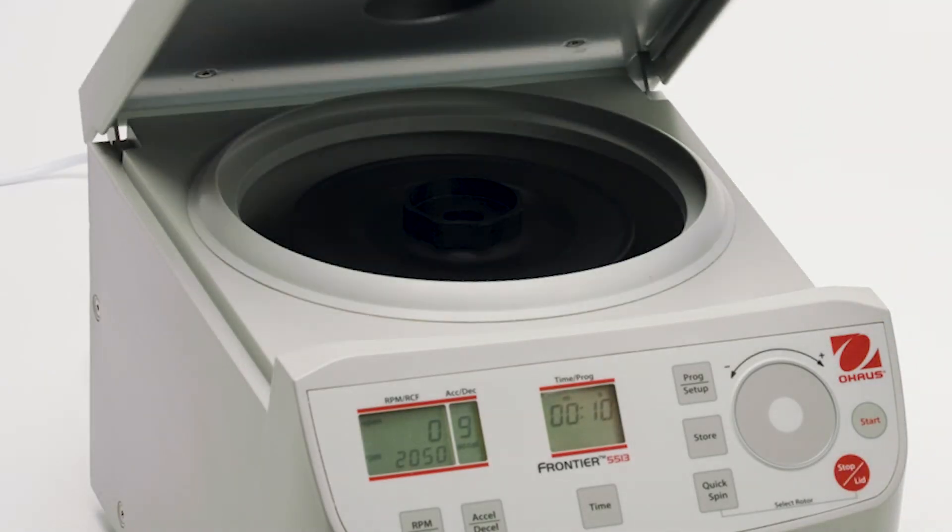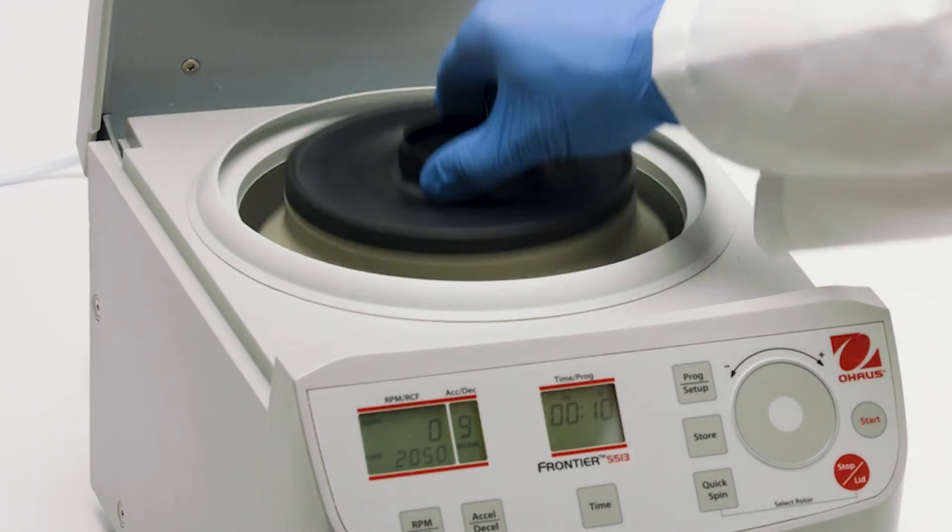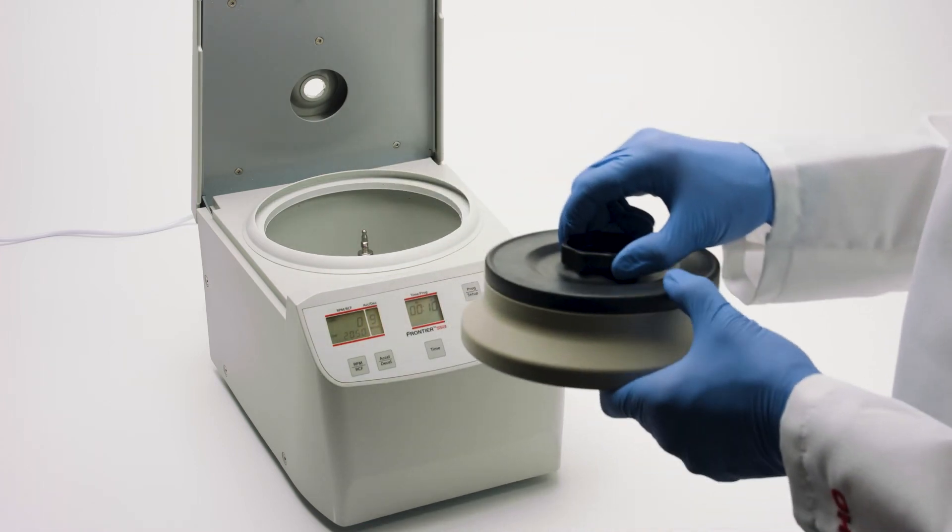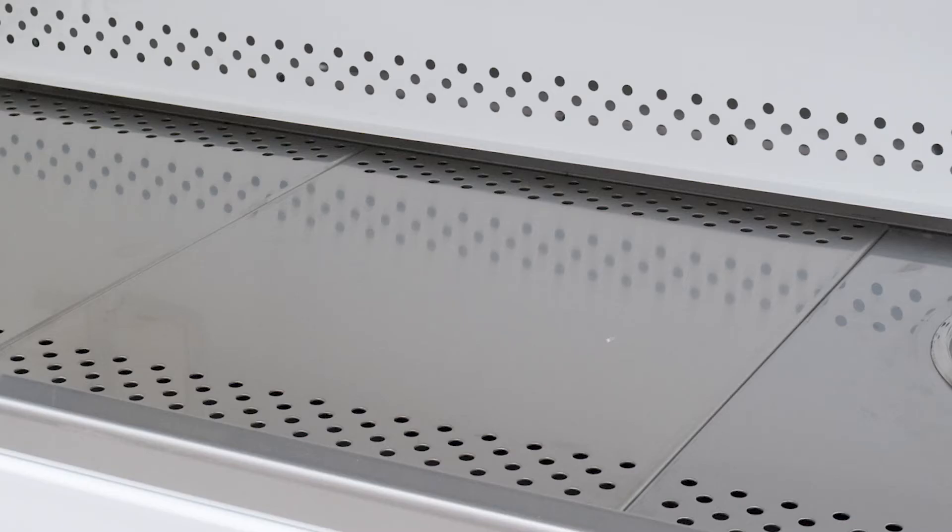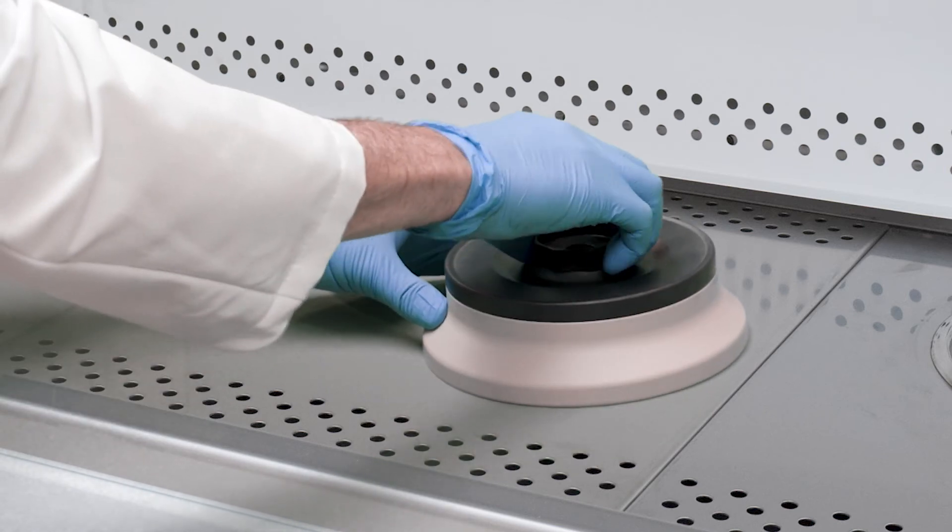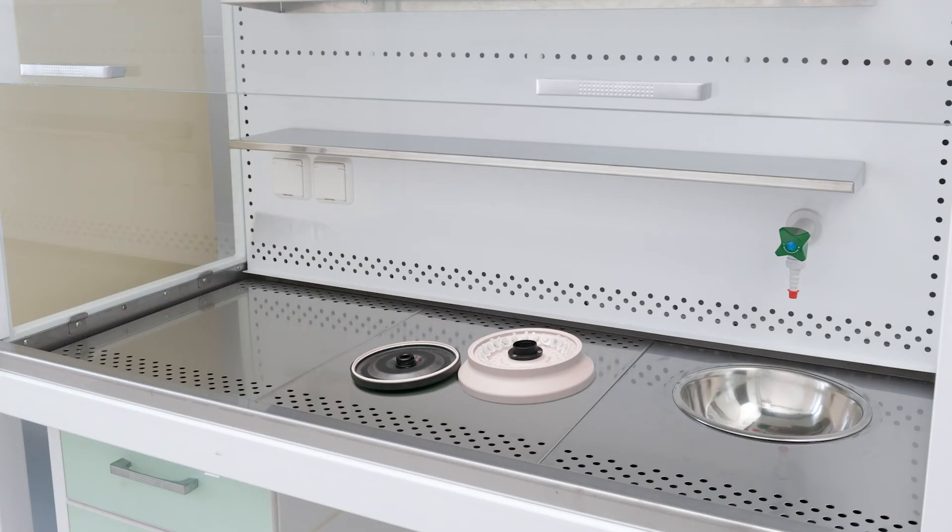After centrifugation, the bio-sealed rotor can be removed from the centrifuge with the lid still secure and safely transported to a bio-safety cabinet. The lid can now be removed, reducing the possibility of releasing aerosols into the lab.